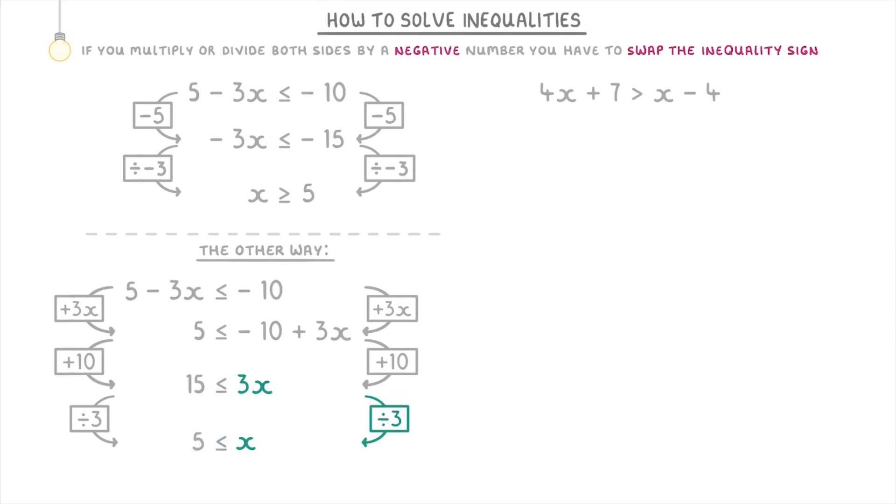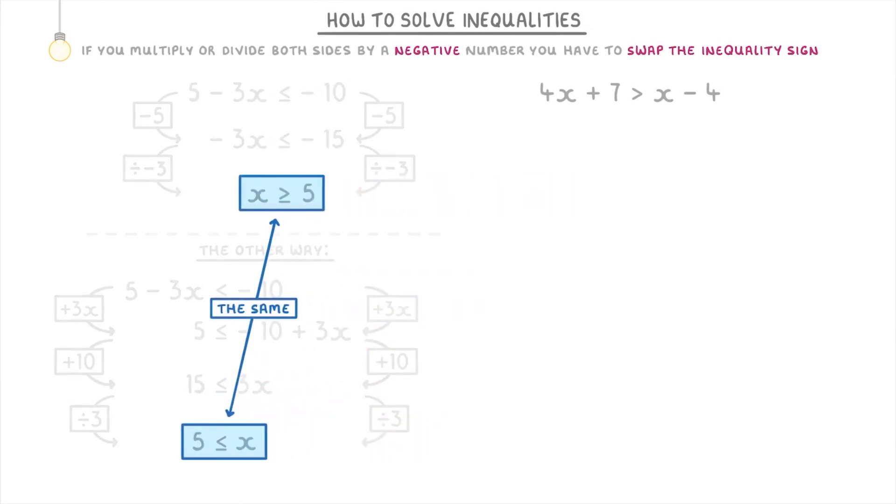Finally, divide both sides by 3 to get 5 is less than or equal to x. Remember, this is exactly the same thing as saying that x is more than or equal to 5, like we got in the first place.